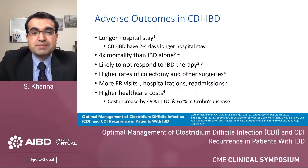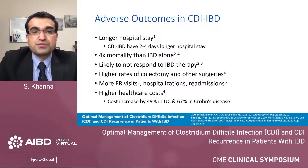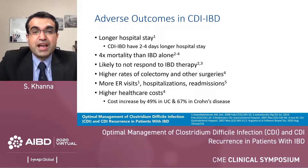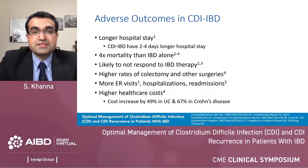When a patient with IBD gets C. diff, it is very important to discuss adverse outcomes and manage aggressively. These patients tend to have a two-to-four day longer hospital stay, a four-fold higher mortality, and are less likely to respond to traditional IBD therapies. In the year after C. diff infection, patients with IBD have a higher risk of colectomy or other surgeries. Healthcare costs increase by 49% in ulcerative colitis and more than 67% in Crohn's disease, making C. diff a very serious infection in IBD.